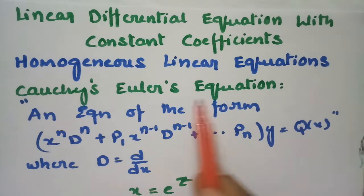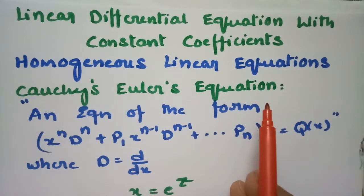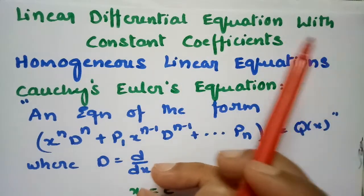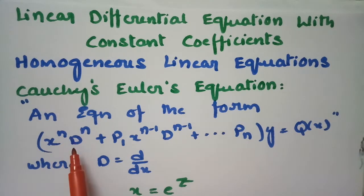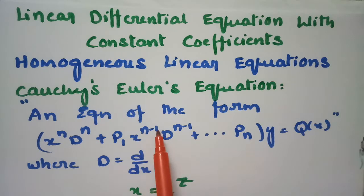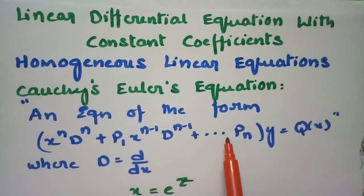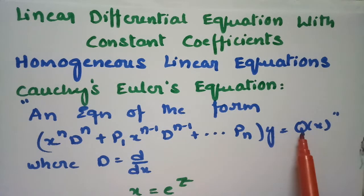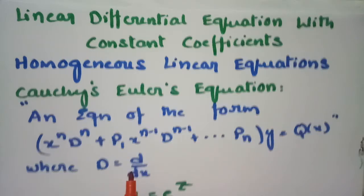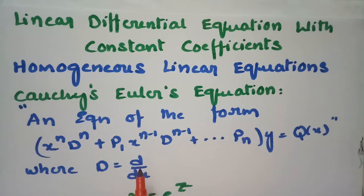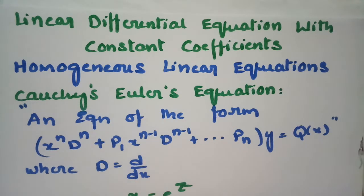Today's video is on Cauchy's Euler equation. This topic is from linear differential equations with constant coefficients. According to Cauchy's Euler equation, an equation of the form x^n D^n + p1·x^(n-1)·D^(n-1) + ... + pn of y equals q(x), where D equals the derivative with respect to x (d/dx). In order to change this Cauchy's Euler equation into linear equations with constant coefficients, we have a substitution.